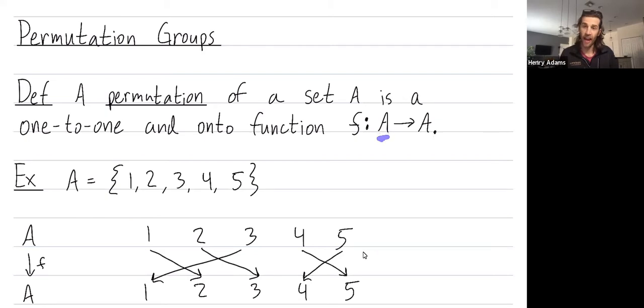And it's onto because every element in the bottom row gets hit. It turns out that because the domain A and the output space, here also A, have the same size, it turns out that whenever your input and output space have the same size, then if you're one-to-one, that implies that you're onto and vice versa. But in general, that's not true if your sets are different size.